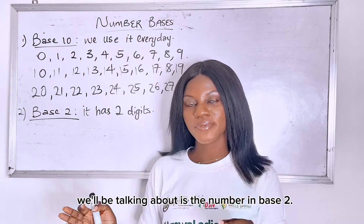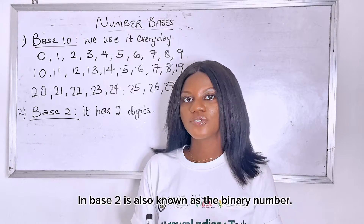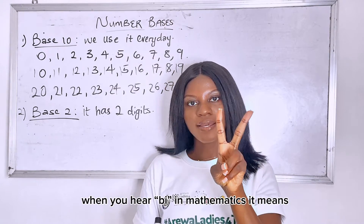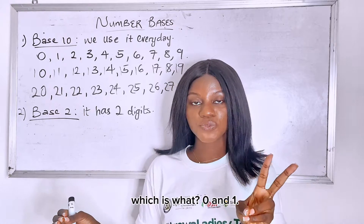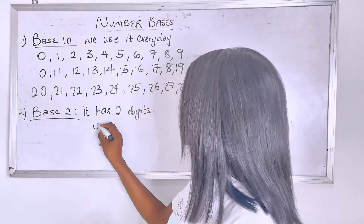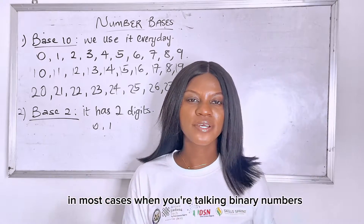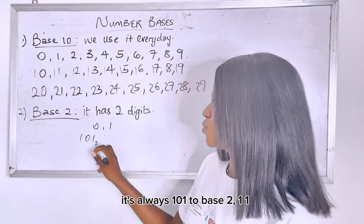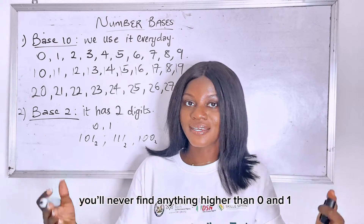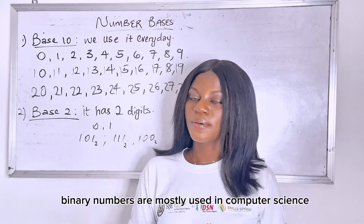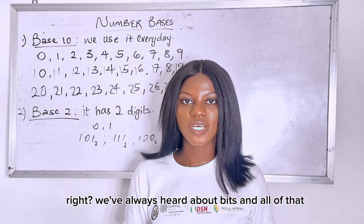The next base we'll be talking about is the number in base 2. We already know about this — we just might be confused. Number in base 2 is also known as the binary numbers. When you hear 'bi' in mathematics, it means 2. Binary numbers have only two digits, which is 0 and 1. So anywhere you see 0 and 1, you just know you're talking about binary numbers. That's why when you're solving binary numbers, it's always 101 to base 2, 111 to base 2, 100 to base 2 — it's always 1 or 0, never anything higher. And remember that binary numbers are mostly used in computer science — we've always heard about bits and all of that, yes, that's where this came from.